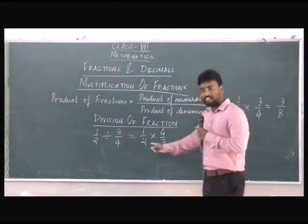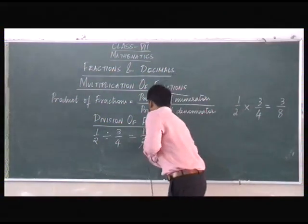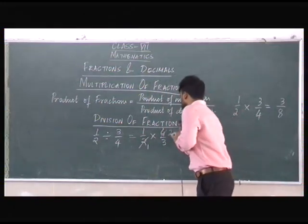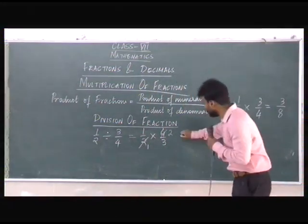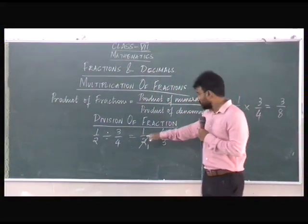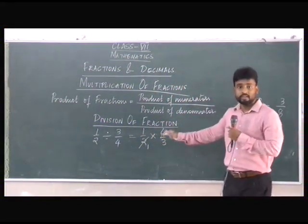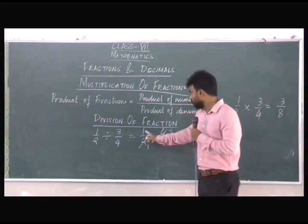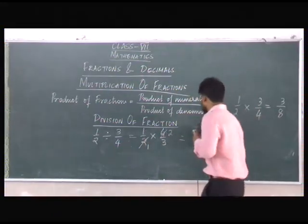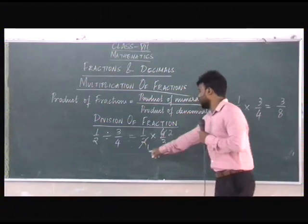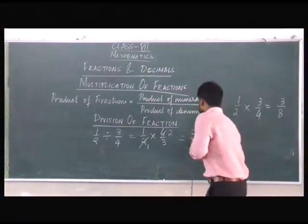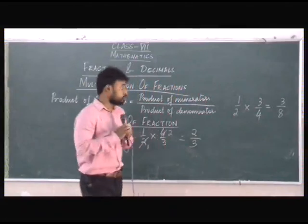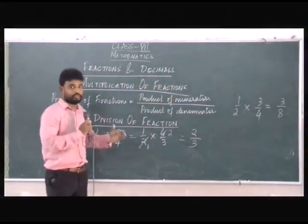So here we can cancel 2 and 4. 2 ones are 2, 2 twos are 4. Now it cannot be cancelled further. So we'll take the numerator: 1 and 2 will multiply, and 1 and 3 will multiply to give 3. So the ultimate answer is 2 by 3. This is how we will divide fractions.